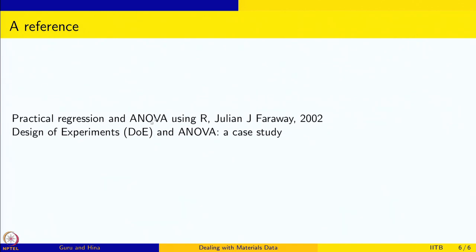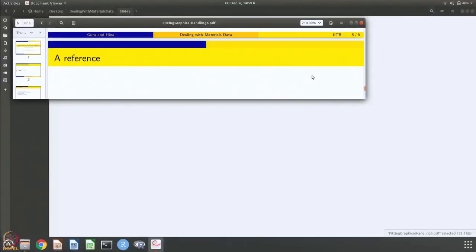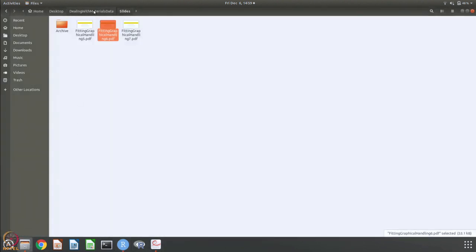We are going to do very simple one-way ANOVA, but there is a good book called Practical Regression and ANOVA using R by Julian Faraway and it is available for free at the R site. You should download and take a look at this book. We will also go from here to design of experiments and ANOVA as a case study in the next module. So let us do this analysis. Start R and let us get the...